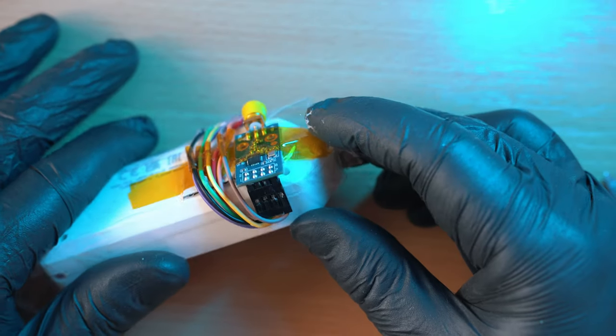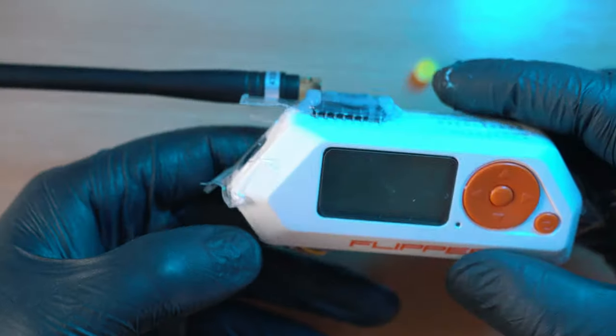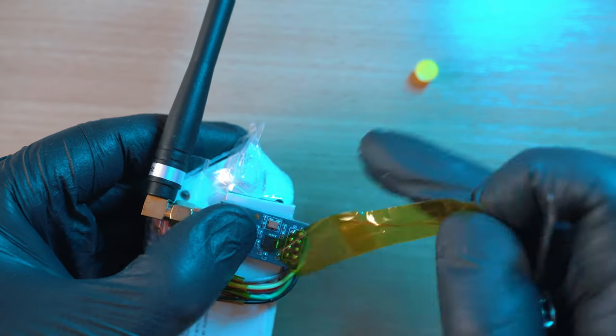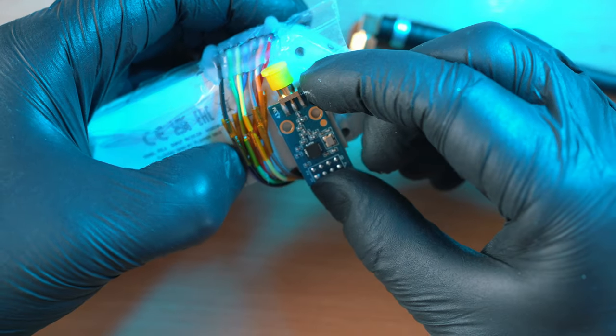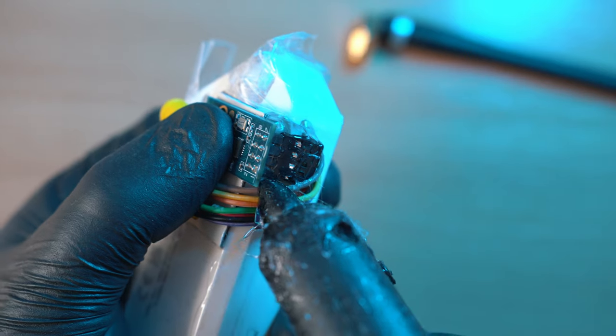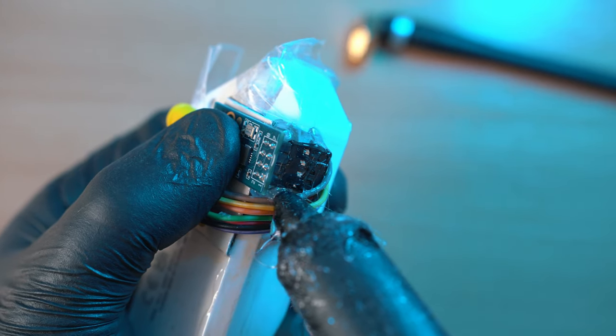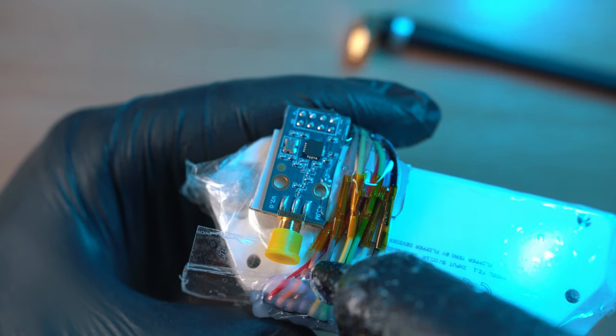Once all connected we can test fit the antenna and see rough design. Now time for more hot glue. First secure connectors then wires and repeat, module itself and join all together. Done.